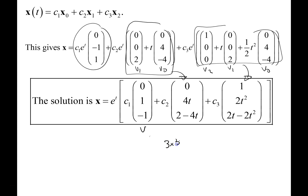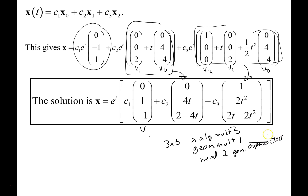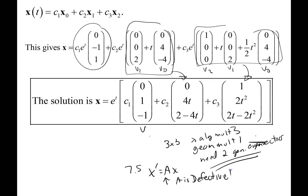So for a 3×3 system with an eigenvalue of algebraic multiplicity 3 but geometric multiplicity only 1, we needed two generalized eigenvectors and then put them together in the general solution. That's it for section 7.5, looking at x′ = Ax where A is defective.